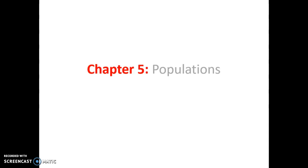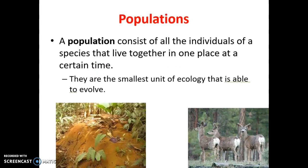Today we are going to go over our populations chapter, which is chapter 5 of our textbook. When we go into a town and see that green sign with the population underneath it, that's the number of humans that live within that city's limits since the last census. When we give population a definition, we say that it consists of all the individuals of that species that live in a particular place at a particular time.